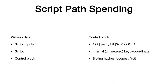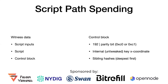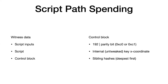Now let's look into script path spending, which requires a bunch of extra things. The witness data has three major parts when you spend a script path: first, all the inputs you'd regularly have for a script spend in the same order; then the script itself, because the consensus engine needs to hash it and verify it meshes correctly with the control block; and the control block, which tells the Bitcoin consensus engine which script path you're using.